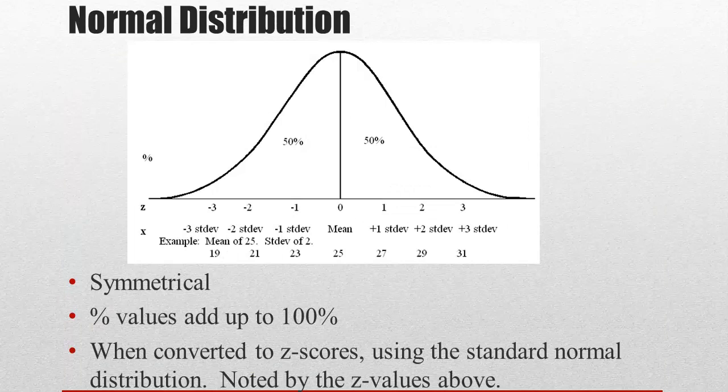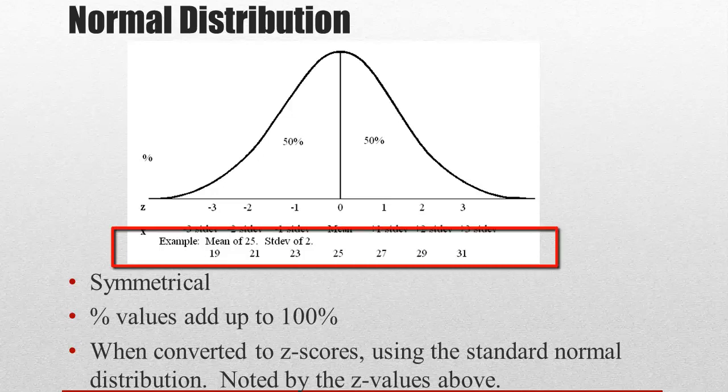Other facts about the normal distribution. It is symmetrical. It's a probability distribution, and as a probability distribution, it means that the probability always adds up to 100%. So at 100%, being symmetrical, 50% is going to be on each side. Now let's go ahead and look at the example.